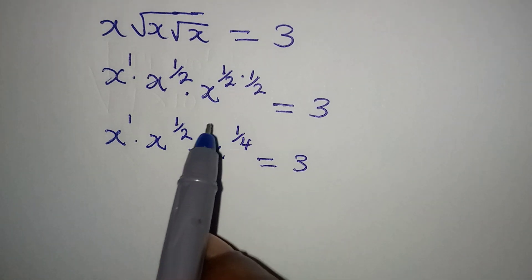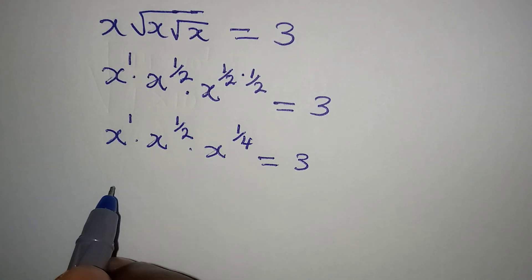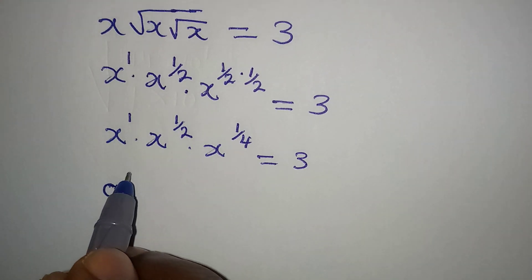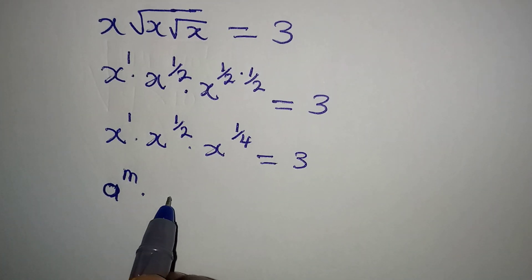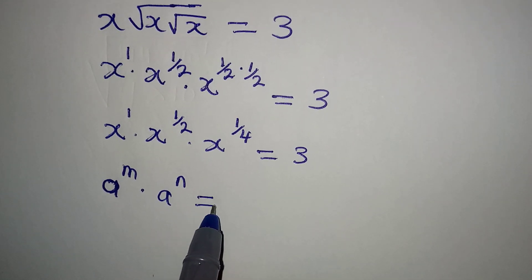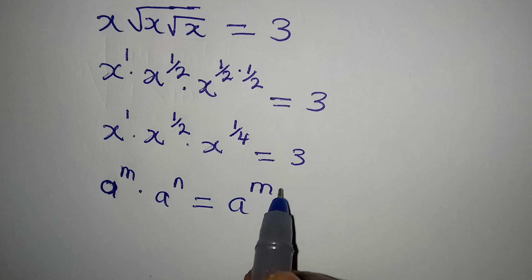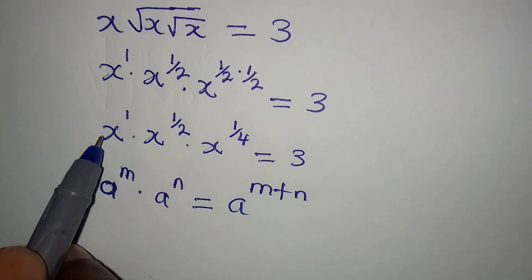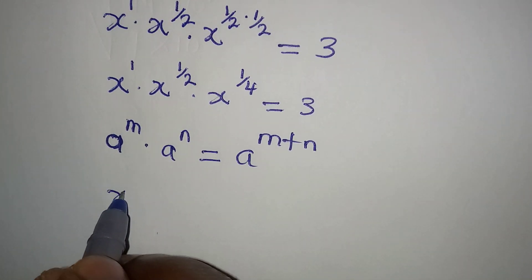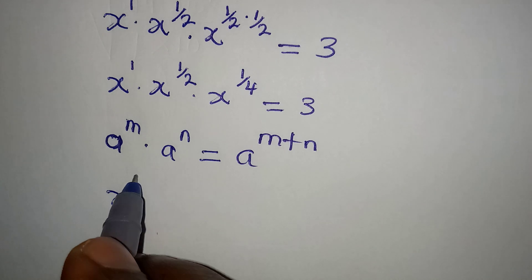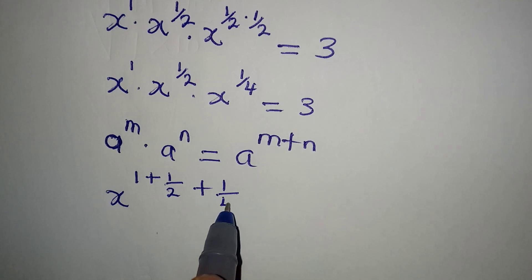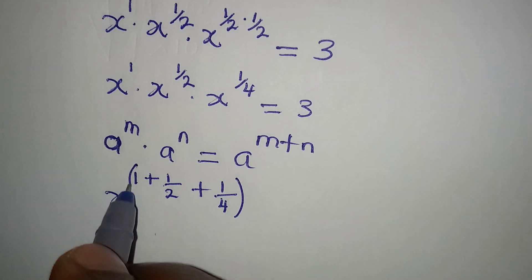Remember, we are applying the first method. From here, if you have anything like a to the power of m multiplied by a to the power of n, applying the law of indices it's going to be a to the power of m plus n. I'm going to do the same thing. Since we have the same base, I will add the powers. So pick one of the bases, then you have 1 plus 1 over 2 plus 1 over 4.